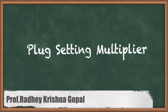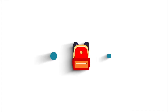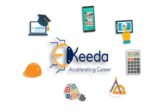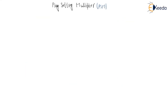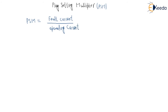We are studying Plug Setting Multiplier, also known as PSM. PSM is the ratio of fault current to relay operating current. For example, if PSM is equal to 10, it means fault current is 10 times more than the relay operating current.